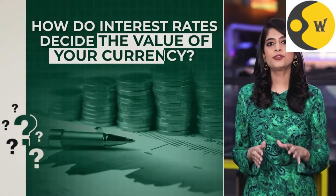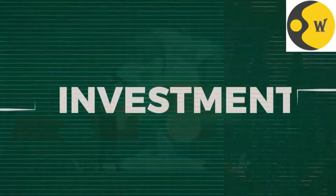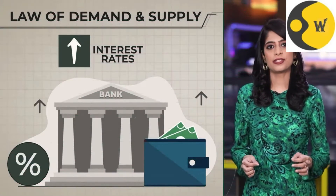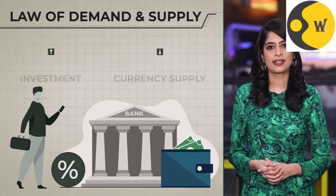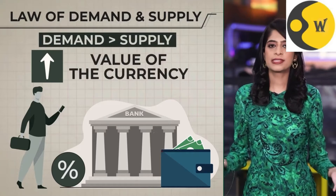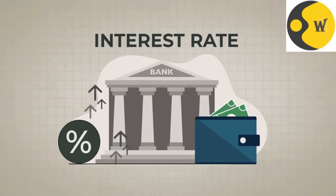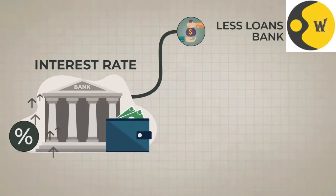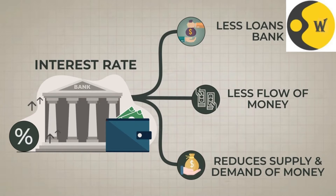How do interest rates decide the value of your currency? For starters, it regulates the amount of money in circulation. When a country hikes its interest rates, investors rush to invest to get the maximum assured returns. A rush for investment reduces the currency supply against the demand — simple economics. Where demand exceeds supply, the value of the currency goes up. Also, when interest rates are hiked, people take less loans from the bank, there is less flow of money in the system, and this again reduces the supply of money vis-à-vis demand.